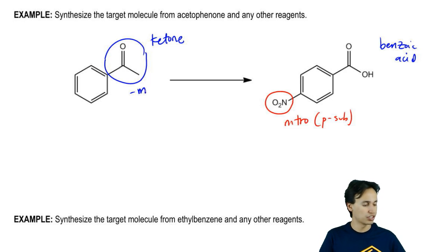Right now this is a meta director. If I were to nitrate this ketone right now or this acetophenone, I would actually get a nitro here. Is that right? No. I'm going to have to use my knowledge of sequence groups to figure out how I can turn that into an ortho para director.